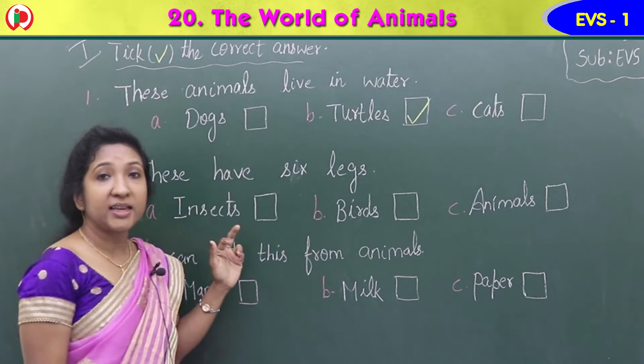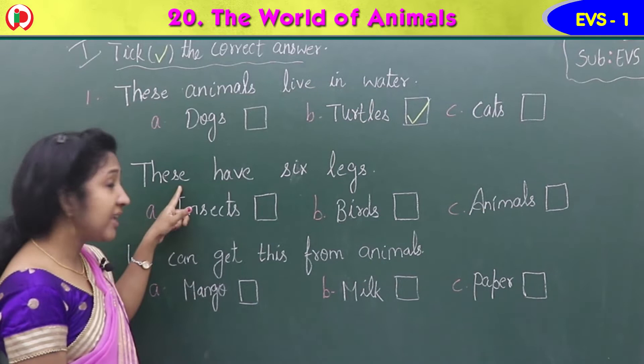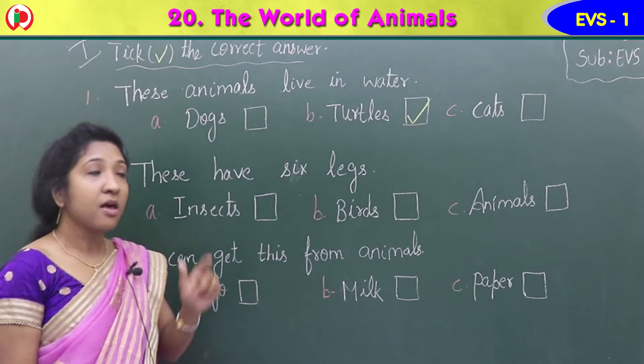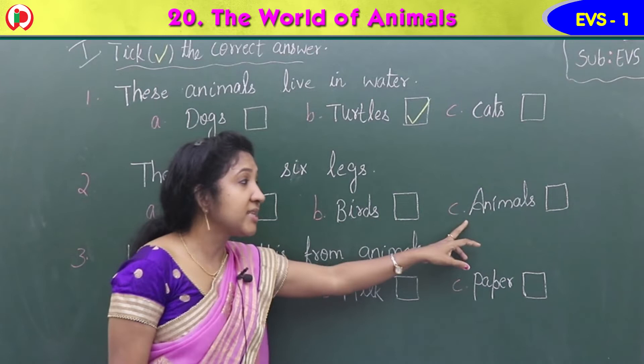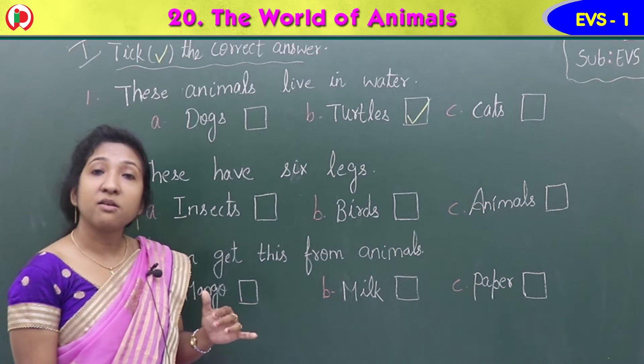Second question: these have six legs. Option A: insects. Option B: birds. Option C: animals. Which is the correct answer for six legs?